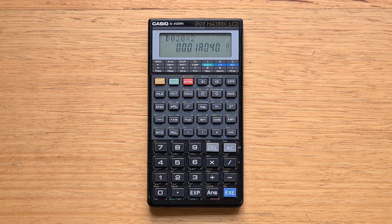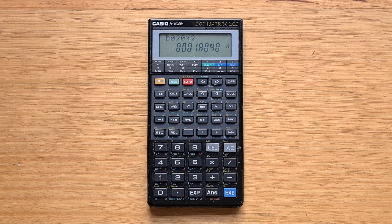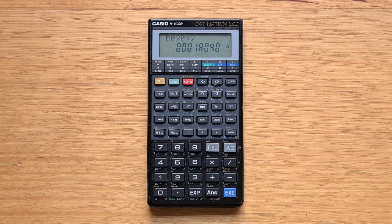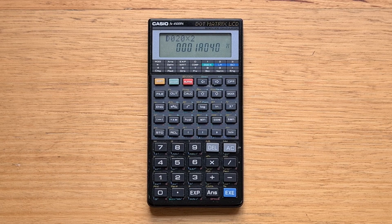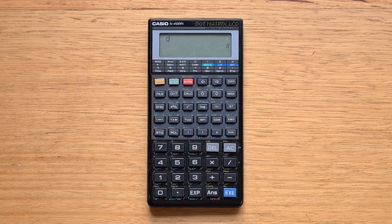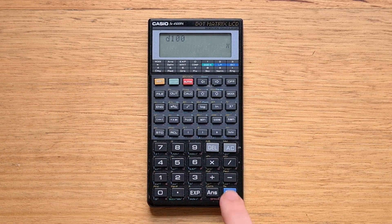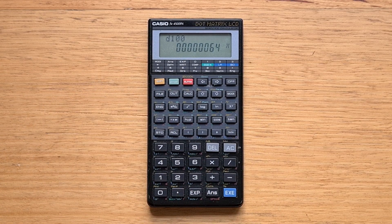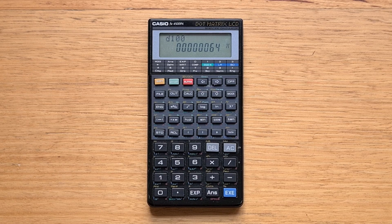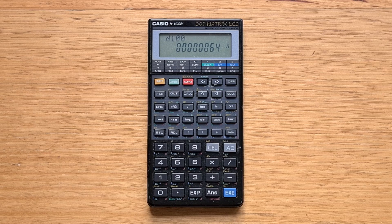We can enter a calculation, say D times two. In base-end mode, we can override the default base with a small base character. So to enter 100 decimal, we can hit shift square root to get little d and then 100. That's 64 in hex.